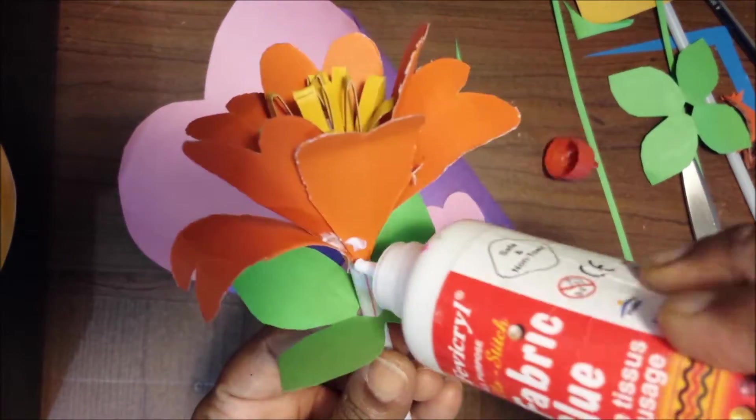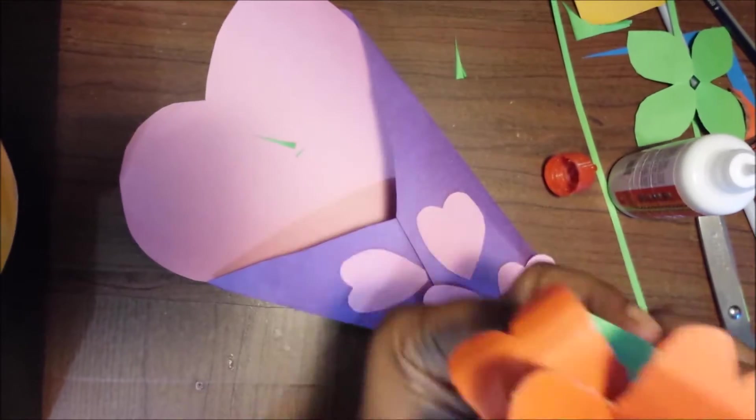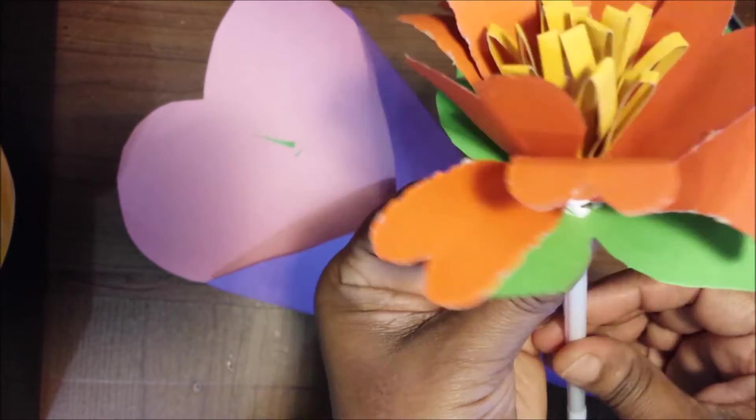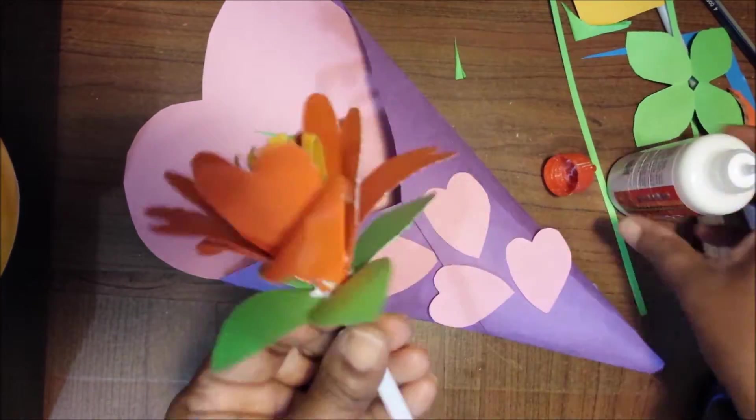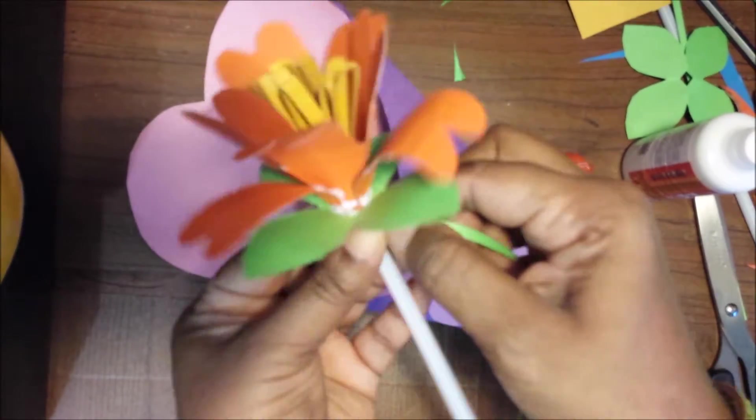After this one, we will roll with the paper strips, green paper strips. It will cover that straw.